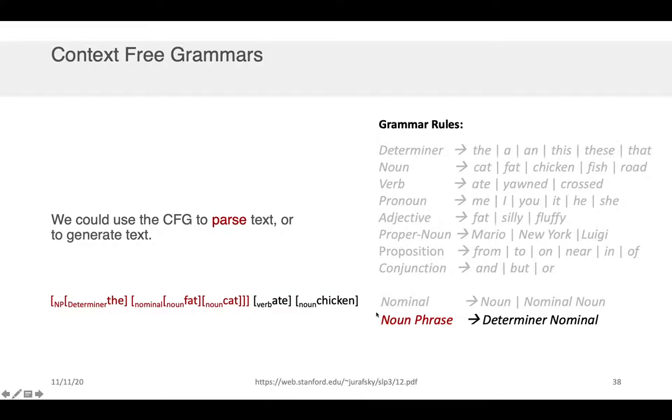And similarly I could then follow this last rule to generate the noun phrase which is the determiner, the, followed by the nominal, fat cat. And I would know that this whole red text segment here is the noun phrase and so I've effectively parsed this sentence into the fat cat as the noun phrase, the verb which is ate and what that verb is acting on which is chicken which is a noun.